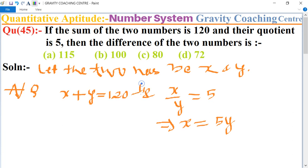So this implies that 6y equals 120. So 120 is cancelled by table of 6, 6 into 20, so y equals 20.